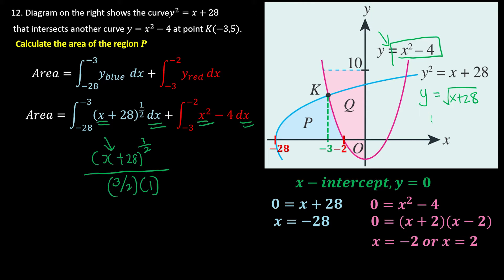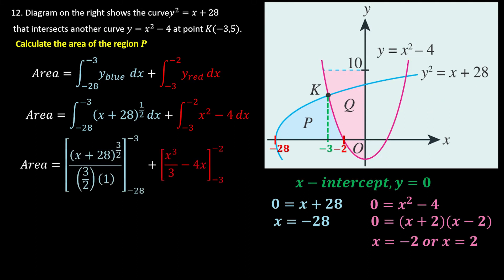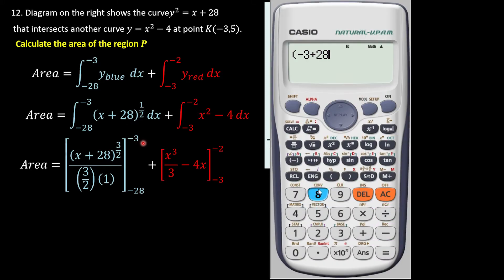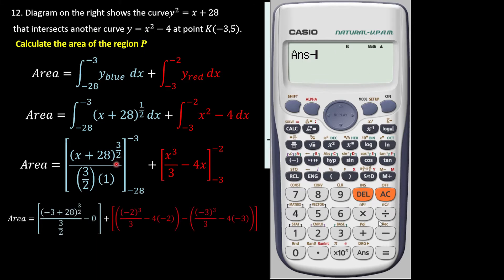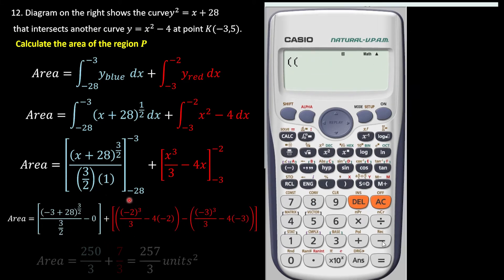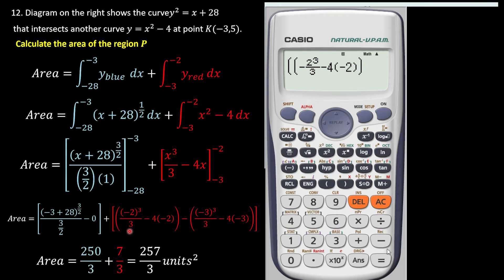For the red curve: x³/3 - 4x, with the appropriate limits applied. After substituting the limits and computing — including 250/3 + 7/3 — the total area of region P is 257/3 unit².